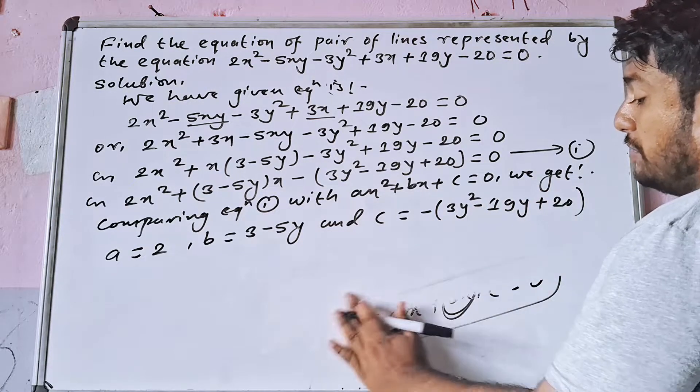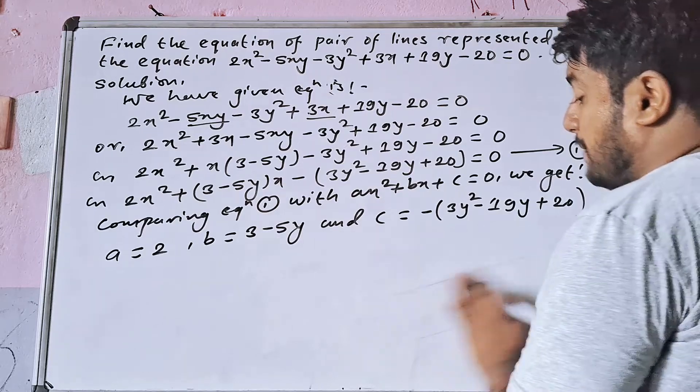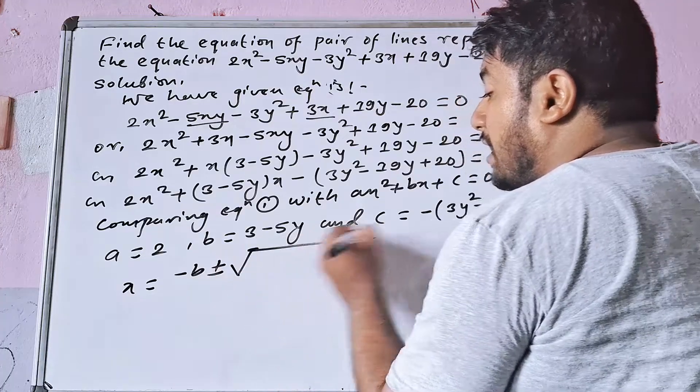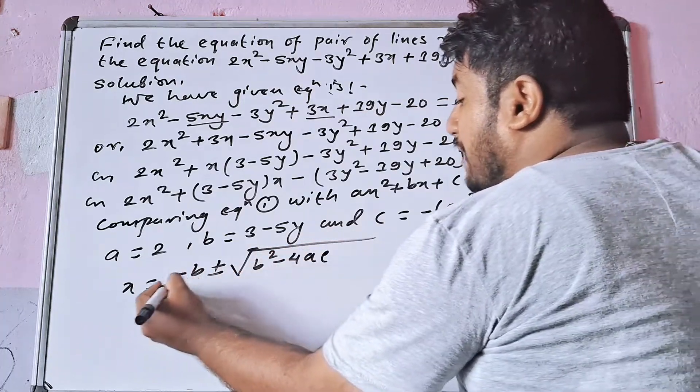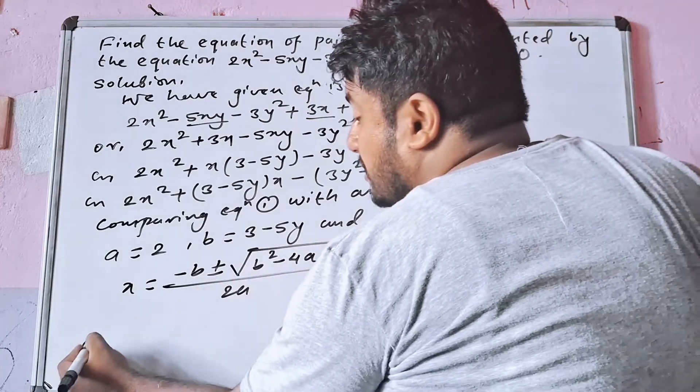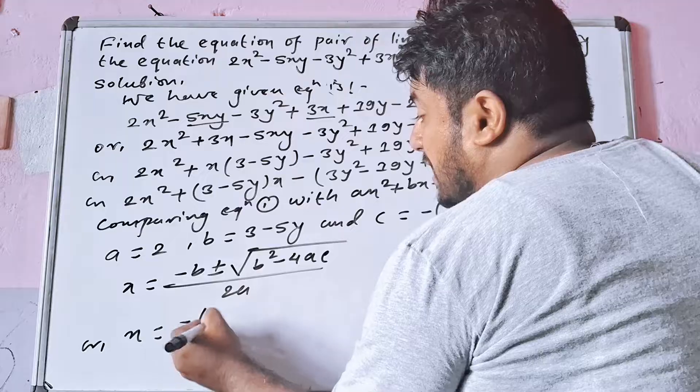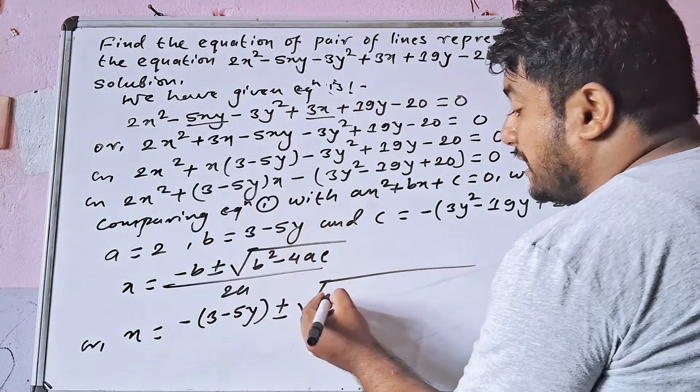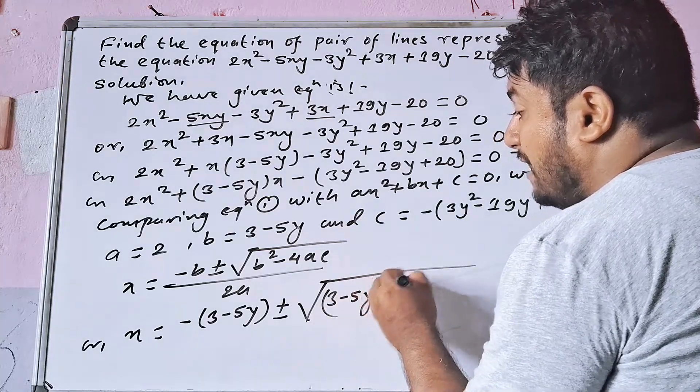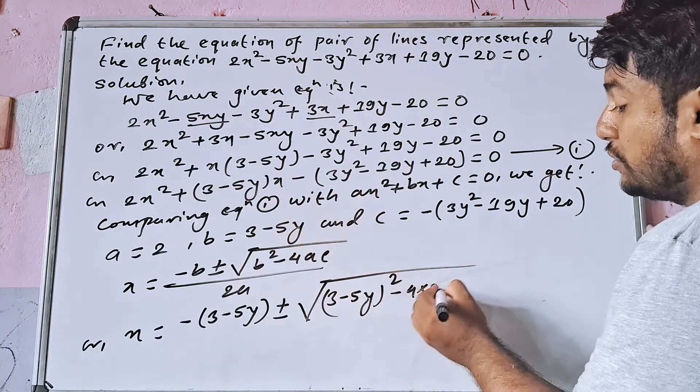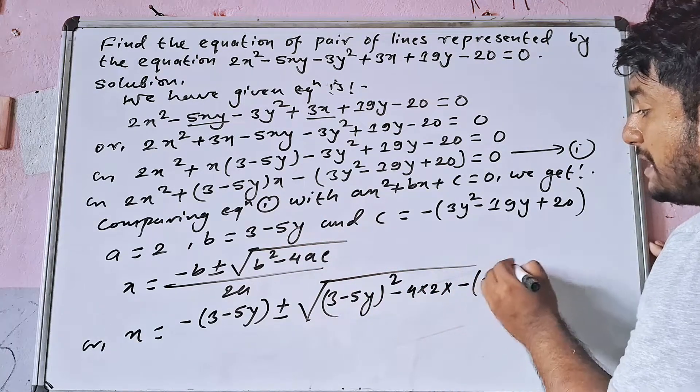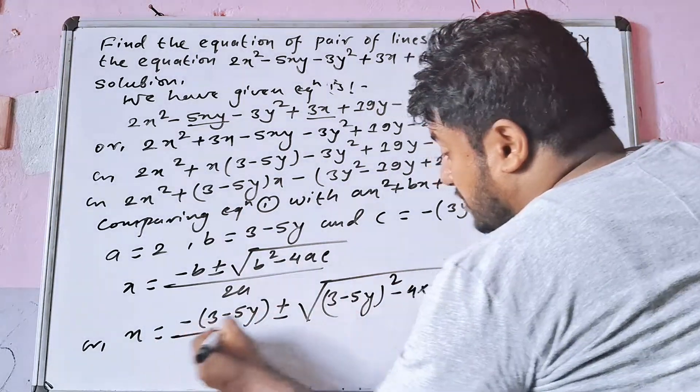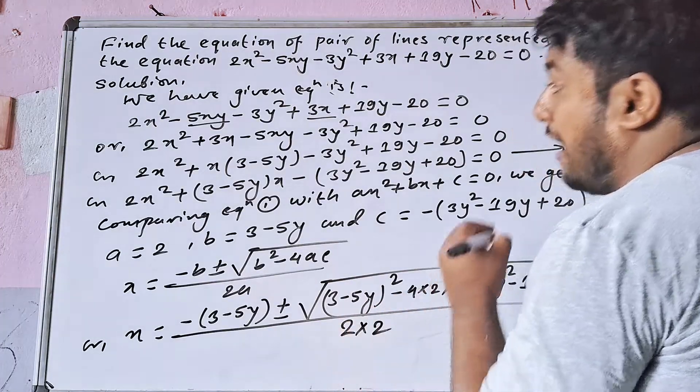Using root formula: x is equal to minus b plus minus root under b square minus 4ac divided by 2a. So x is equal to minus 3 minus 5y plus minus root under 3 minus 5y whole square minus 4 into 2 into minus 3y square minus 19y plus 20, whole divided by 2 into 2.